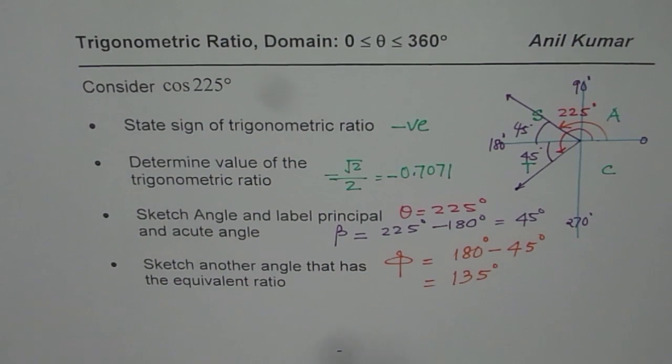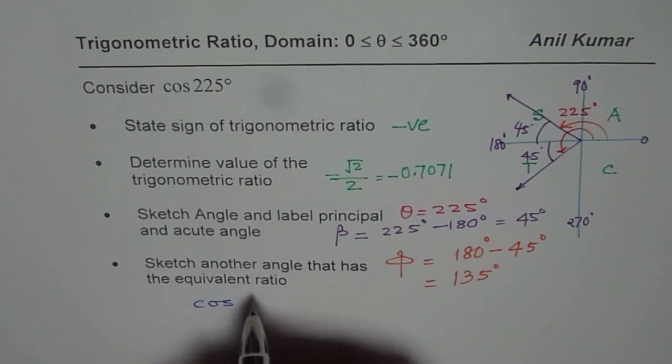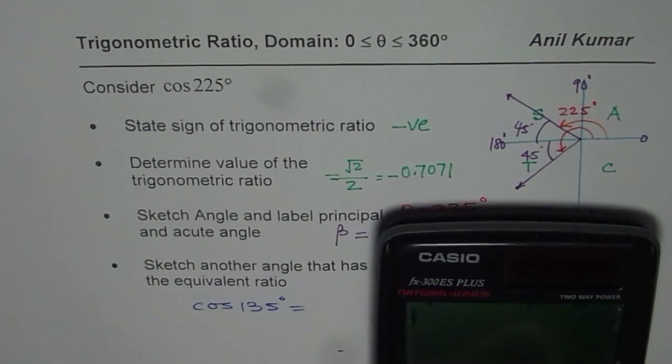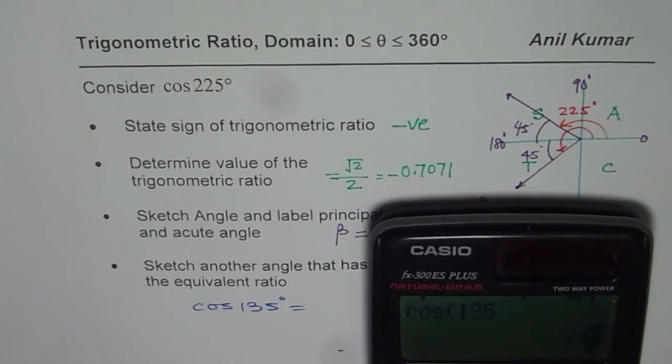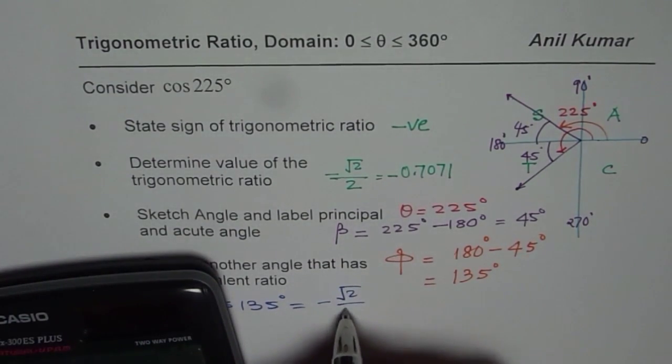So, let us check. So, what we can do here is, now we can calculate the value. What is cos of 135 degrees? Let us check. So, we will again use the calculator and say cos of 135 degrees is equal to minus square root 2 over 2. So, we get the same answer, minus square root 2 over 2.